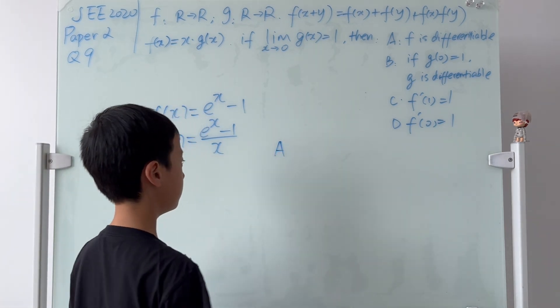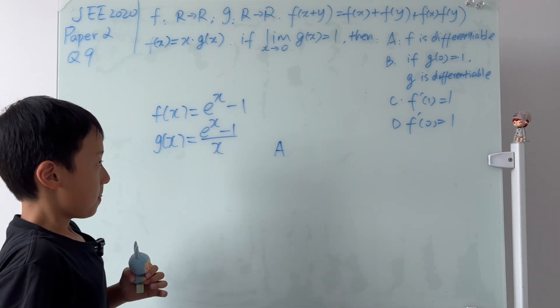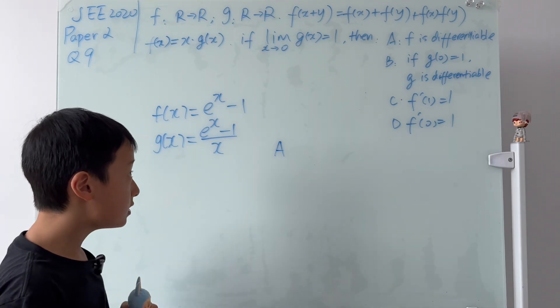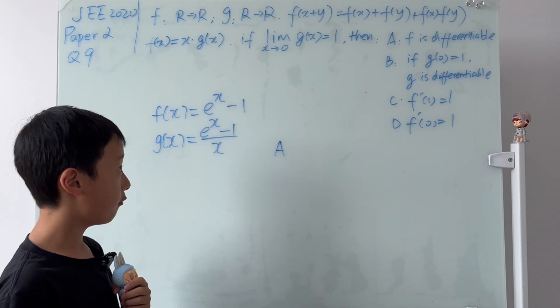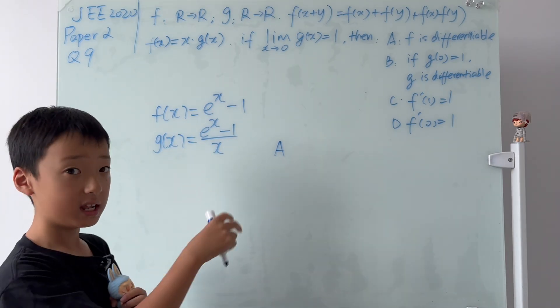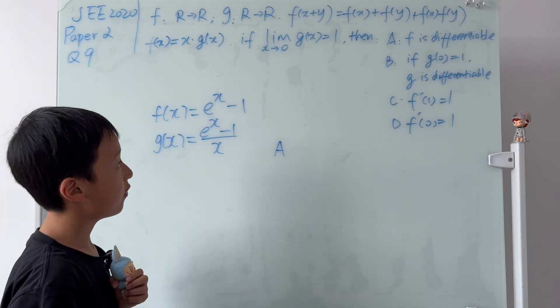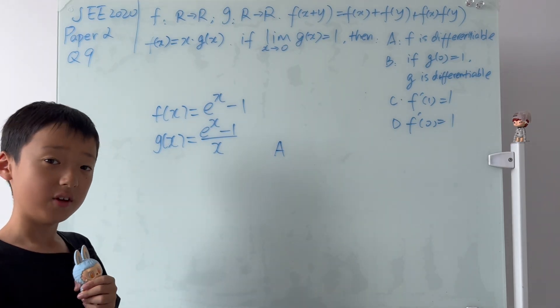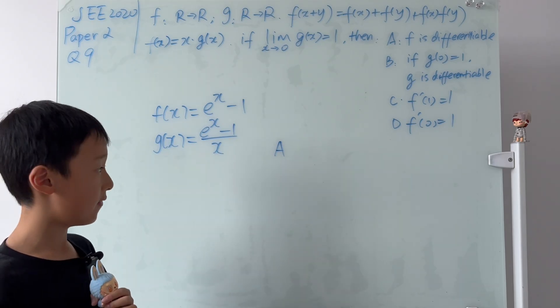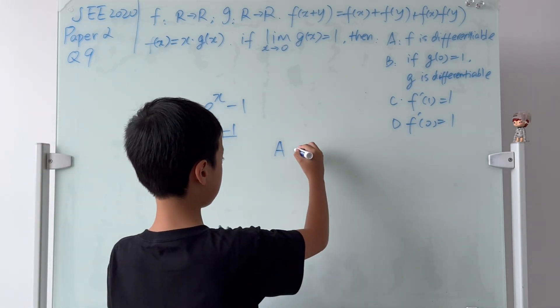Now, guys, I'm going to let b be last since b is the hardest. So right now, I'm going to do a, c, and d and leave b for the last. So, a: f is differentiable. Yes, because since f is an exponential function, f is differentiable. So a is correct.